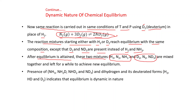After equilibrium is attained, the two mixtures — one containing H₂, N₂, NH₃ and the other containing D₂, N₂, ND₃ — are mixed together and left to achieve a new equilibrium. After reaching the new equilibrium, analysis of the composition shows that NH₃, NH₂D, NHD₂, ND₃ along with H₂, HD, and D₂ are all present. The presence of these mixed species indicates that equilibrium is dynamic in nature.